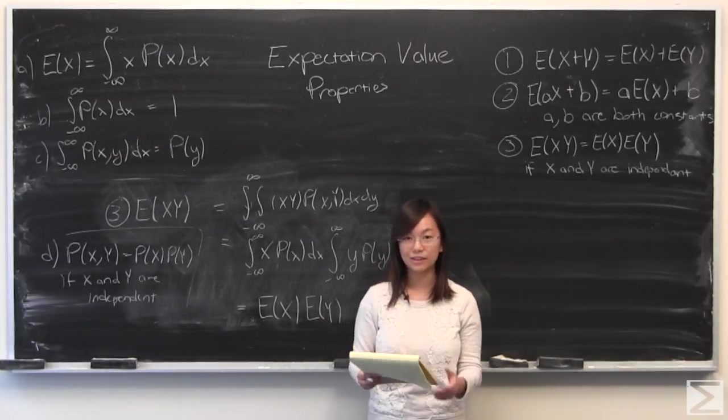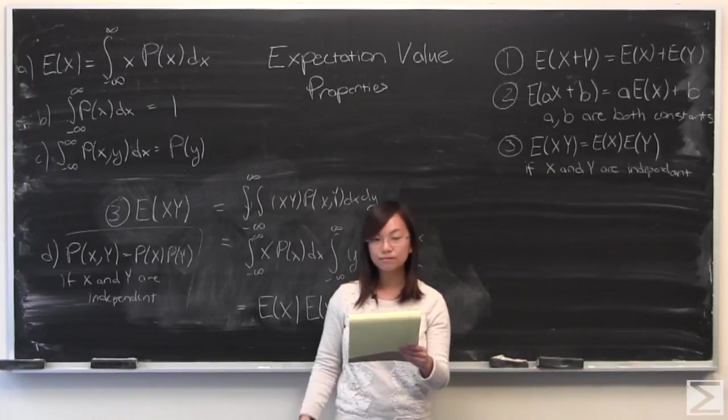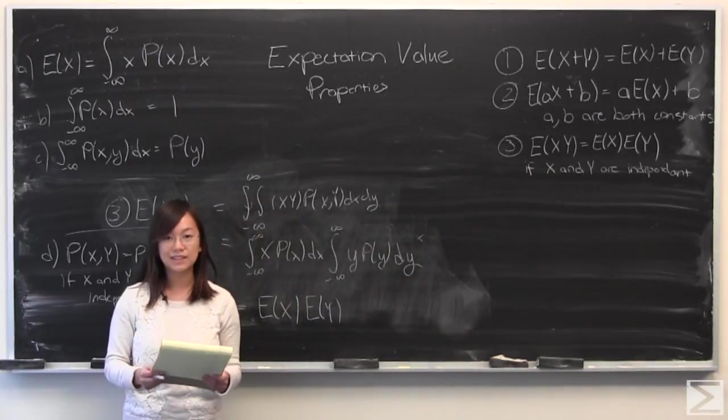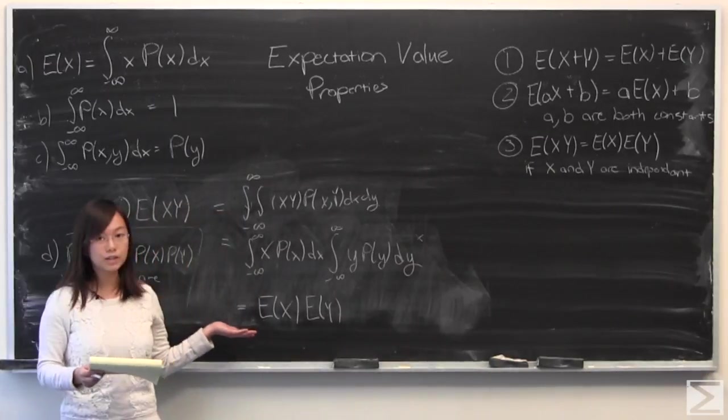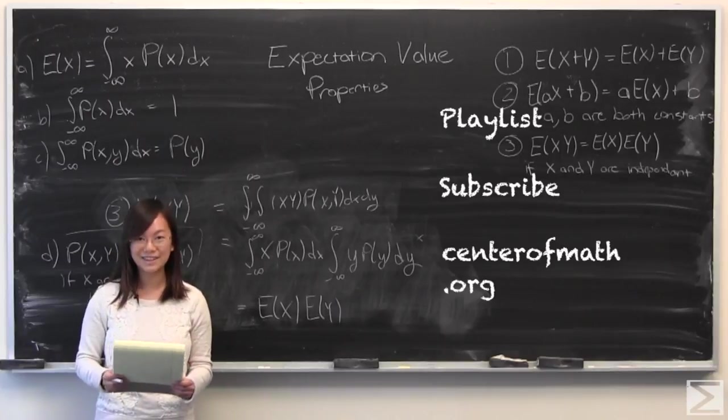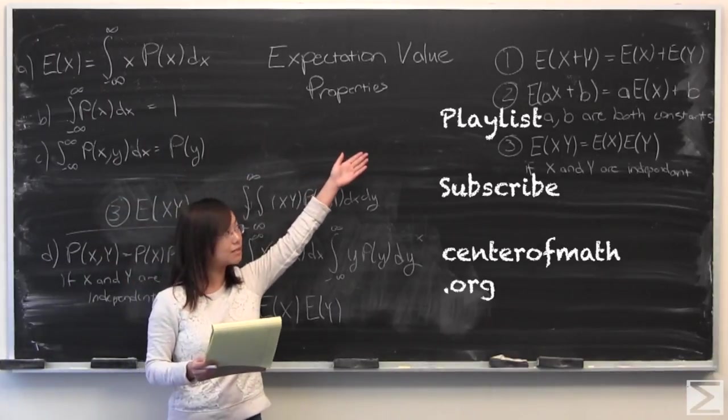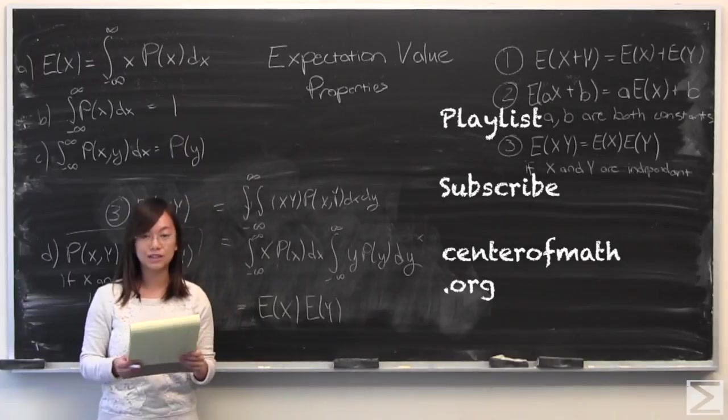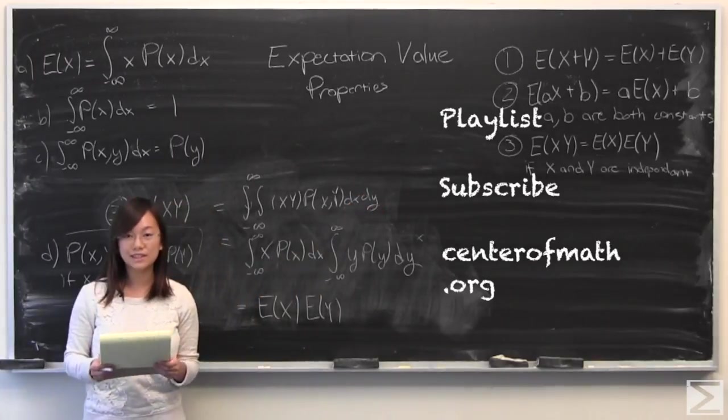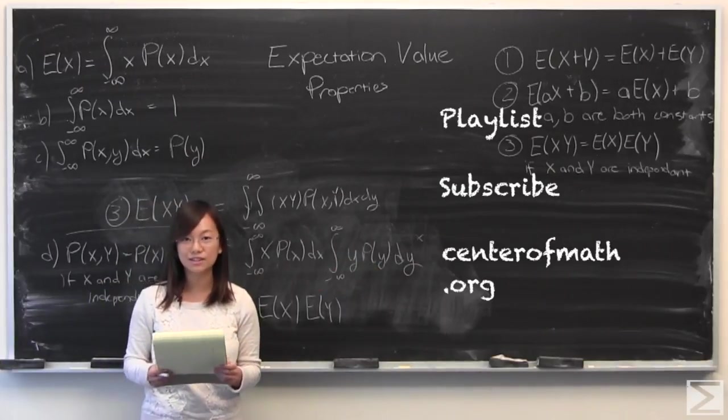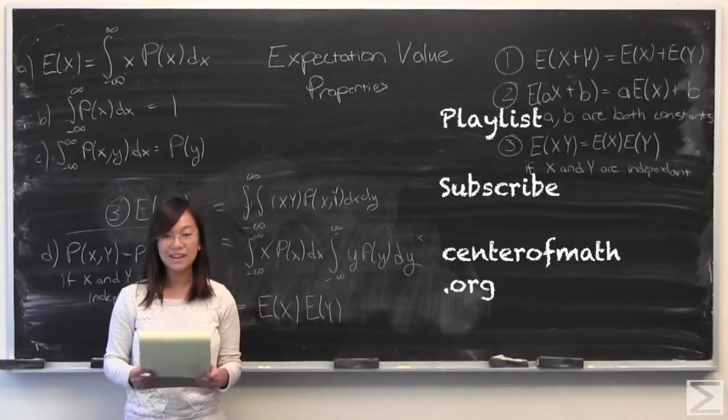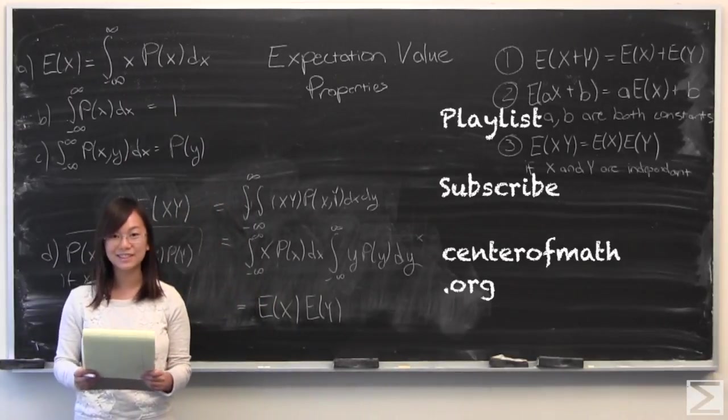That is all I have for expectation value properties today. These are really helpful and useful in probability and statistics. You need these properties to prove variance properties, which are also very helpful. If you want to see more probability and statistics videos, click up here for the playlist. If you want to subscribe to our YouTube channel, click right here. If you want to visit us on centerofmath.org, click here. If you're on a mobile device, there should be an I in the top corner. Click that for the same links. Thank you very much for watching, and we hope you learned something.